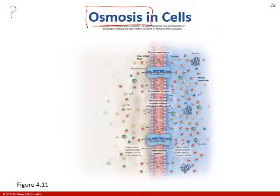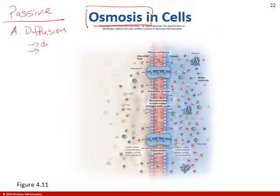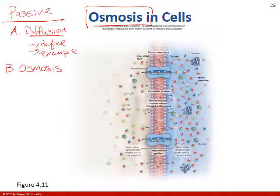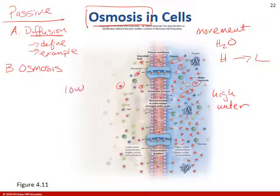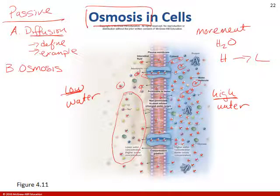Osmosis is the second type of passive transport. Diffusion was the movement of non-charged particles from high to low. Osmosis is the movement of water from high to low concentration. Looking at the image, on one side there are many water molecules — high water — and on the other side relatively low water. The water moves from high to low, trying to equalize or dilute all the ions to make things even on both sides.